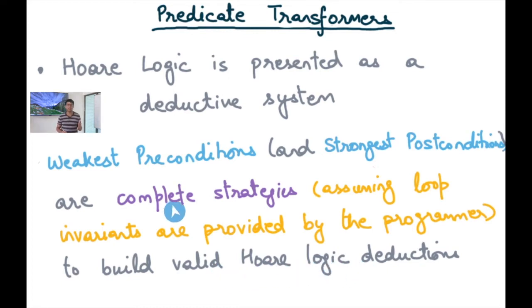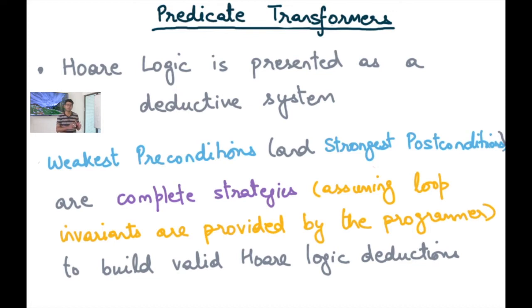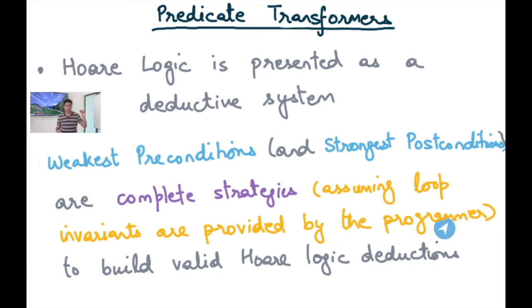You might be surprised when I say 'complete strategies,' because we've already said that Hoare logic is incomplete due to Gödel's theorem and undecidability. The rider is: assuming that the loop invariants are provided by the programmer, under this assumption it's a complete strategy. This appeals to the relative completeness theorem — if some oracle gives us the p-primes and q-primes of the consequence rule, which represent loop invariants, then any possible rule can be derived. These predicate transformers give you an algorithm to derive those rules, assuming the oracle — in this case the programmer — provides the loop invariants.